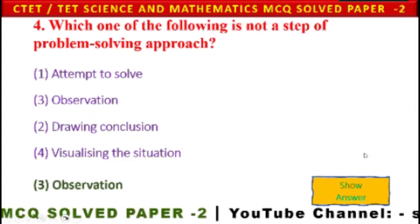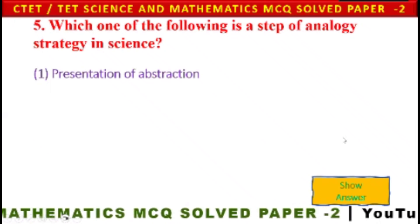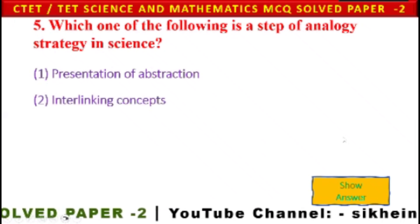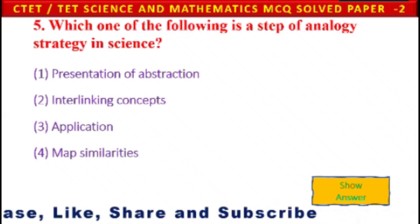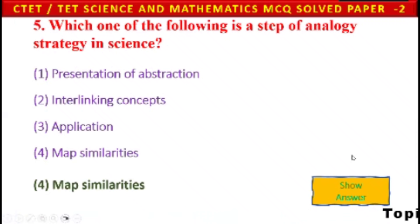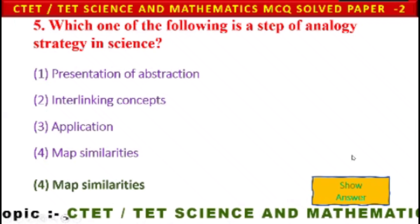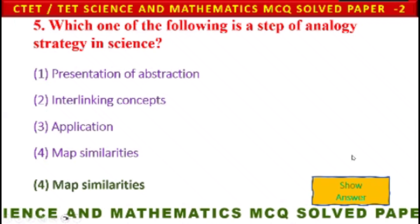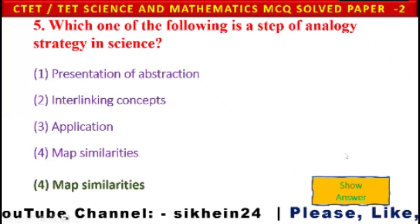Next question: Which one of the following is a step of analogy strategy in science? 1) Presentation of abstraction, 2) interlinking concepts, 3) application, 4) map similarities. The answer is option 4 — map similarities is a step of analogy strategy in science.